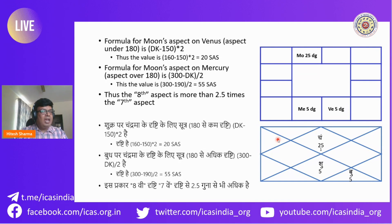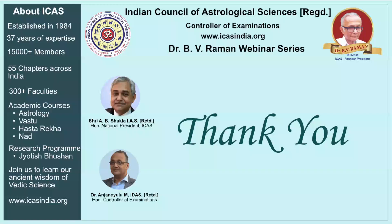You may often encounter a horoscope like this where you will assume that the 7th aspect is stronger and the 8th aspect is weaker — but actually it is not. The mathematics of Shadbala shows us that aspect strength depends on degree-based distance from 180°, not simply on which sign the planet occupies.